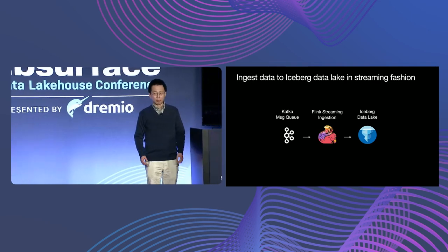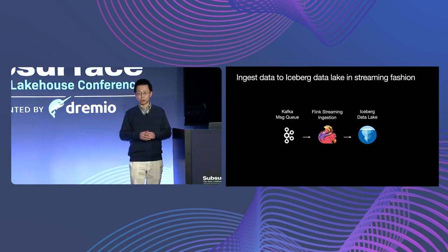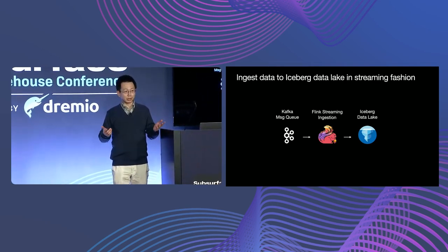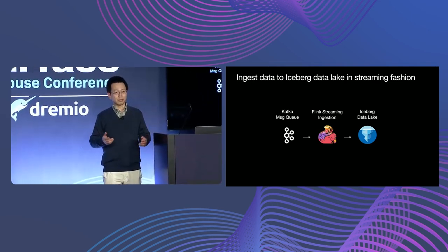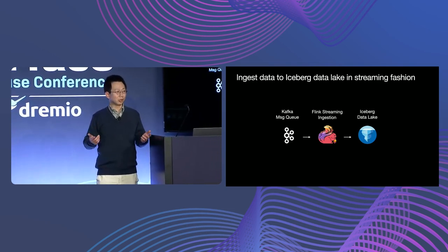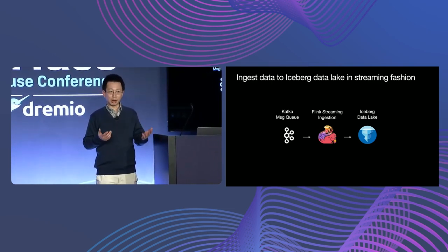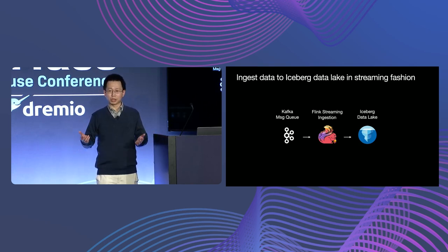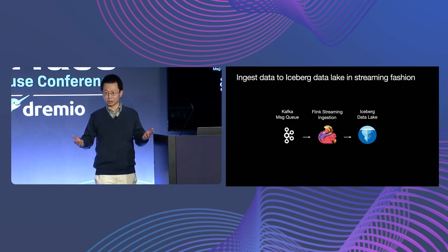Most data are born as a continuous stream. They typically land in a message queue at Kafka first. Then a stream processing engine, like Flink, can read data from Kafka and commit them to an Iceberg data lake. In the stream ingestion path, data can commit to Iceberg every few minutes.